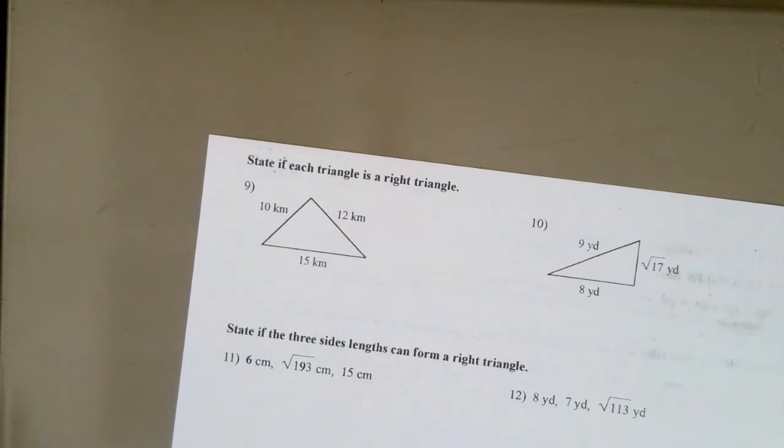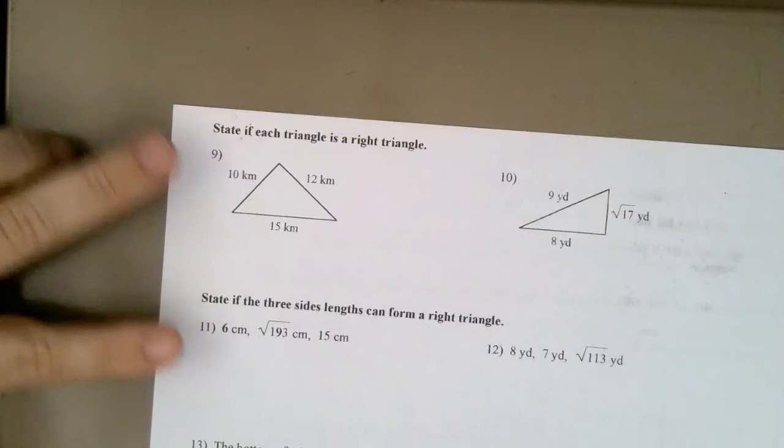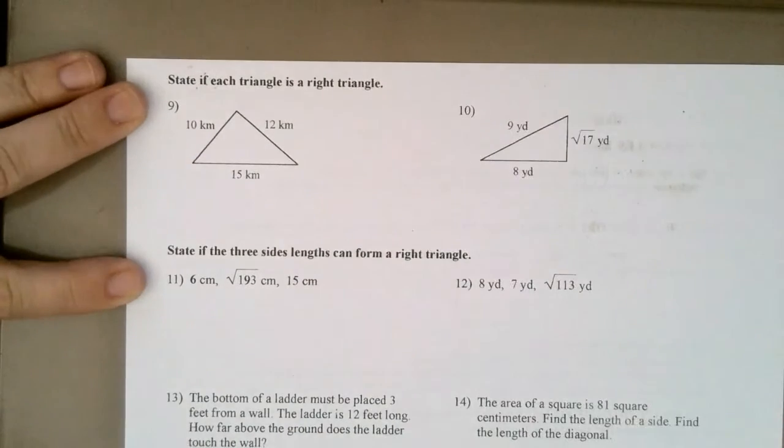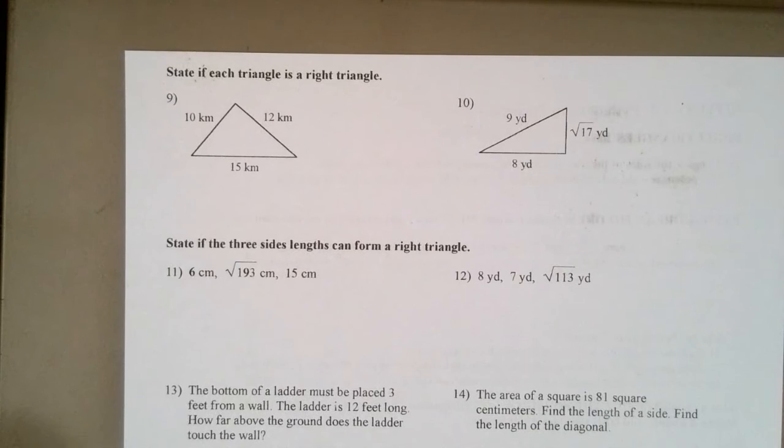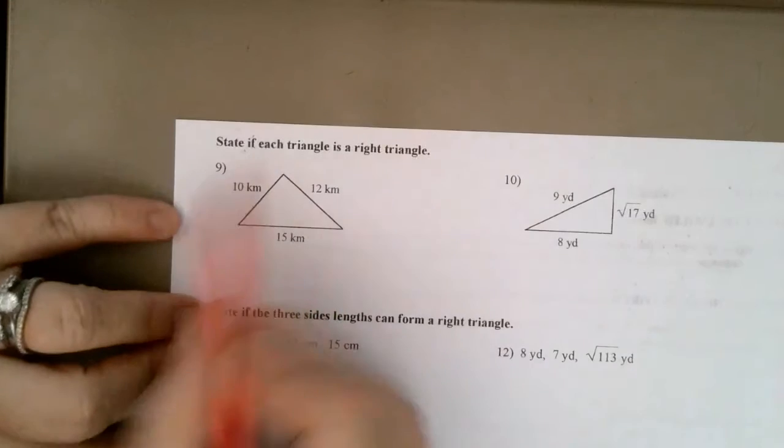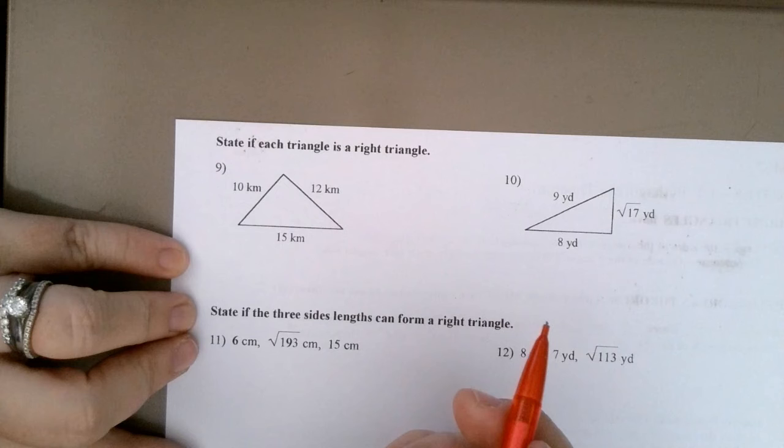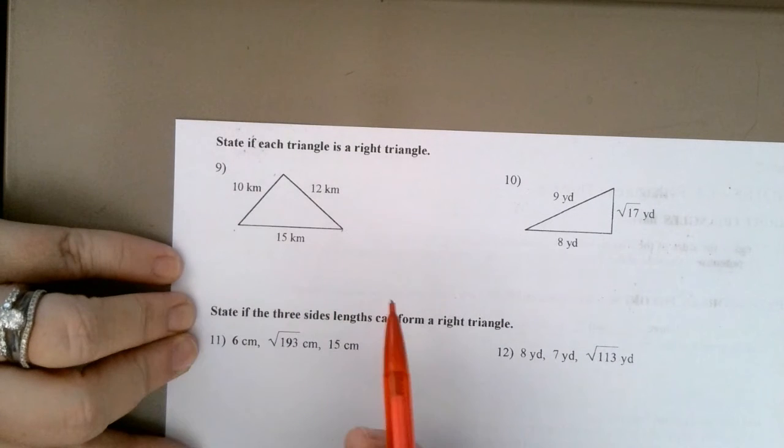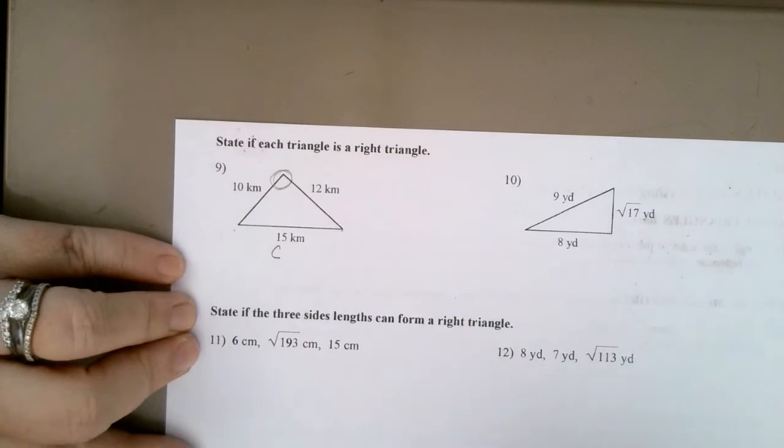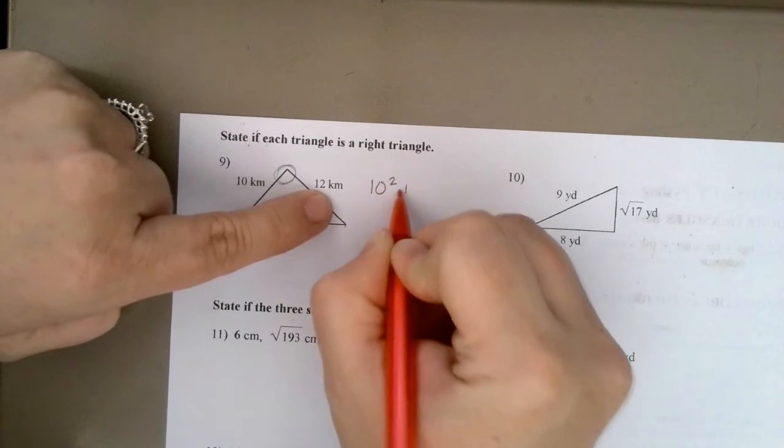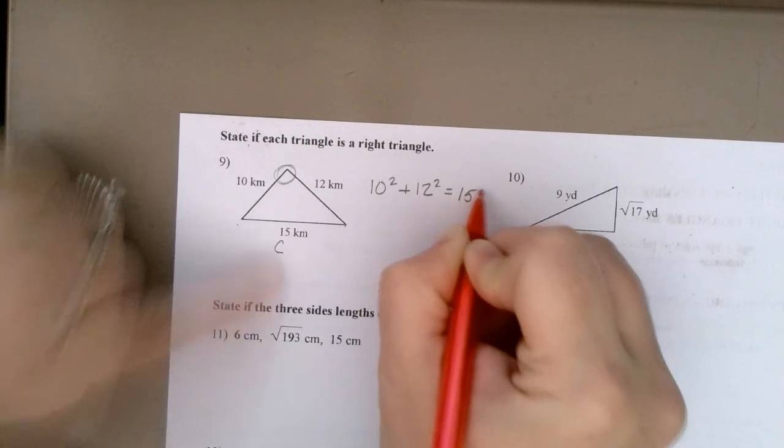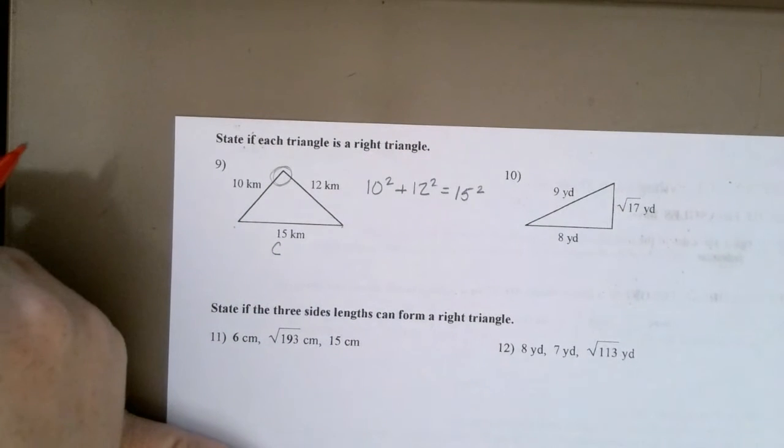I think we kind of get the idea of A squared plus B squared equals C squared. But, 9, 10, 11, and 12 are asking a different question. It's saying state if it is a right triangle or state if they can form a right triangle. In other words, I need to see, is A squared plus B squared indeed equal to C squared? So, in this triangle, do you see how there's no right angle? Where are they thinking the right angle would be? Top, left, or right? Top. So, if this is the right angle, we would be assuming that this is C. So, the way we say if this is a right triangle or not is we do 10 squared plus 12 squared. Does that equal 15 squared? If it does, then we have a right triangle. If it doesn't, then we don't have a right triangle.